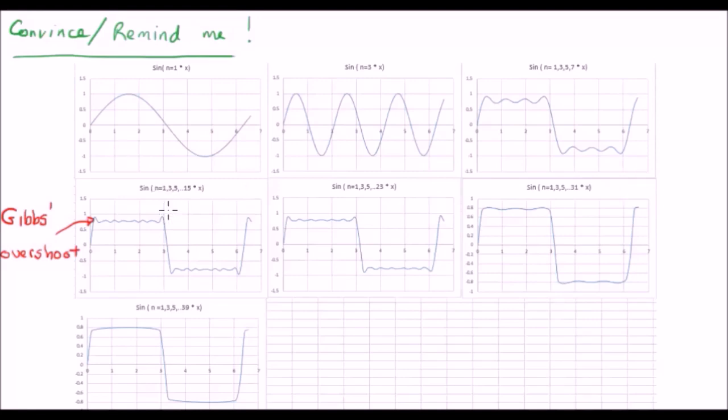Now before I go to the final one, I'd just like to point out that this thing here is called a Gibbs overshoot. It means that discontinuities are very difficult to represent using Fourier series and require an infinite number of terms. But that's something that's not really for this time.